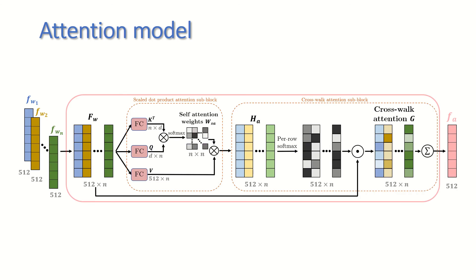Our attention block consists of two sub-blocks. The scaled dot product attention sub-block is given n walk feature vectors and generates a new matrix of walk features, H_A. There, each walk is enriched by information from other walks, utilizing the scaled dot product attention block.